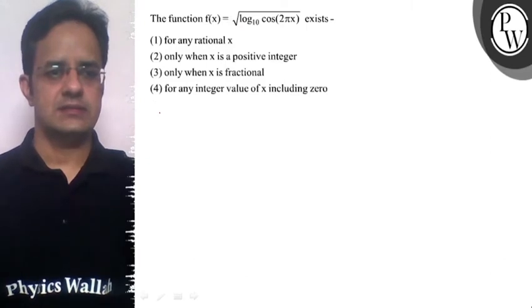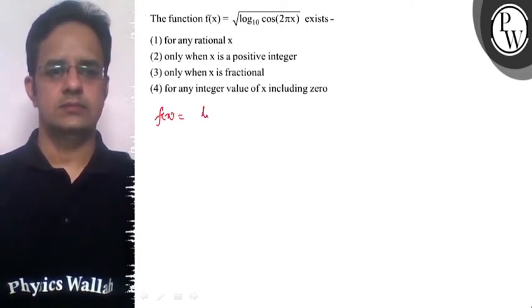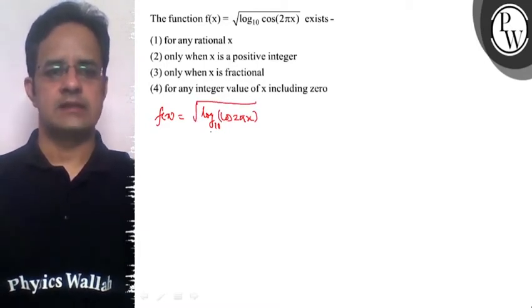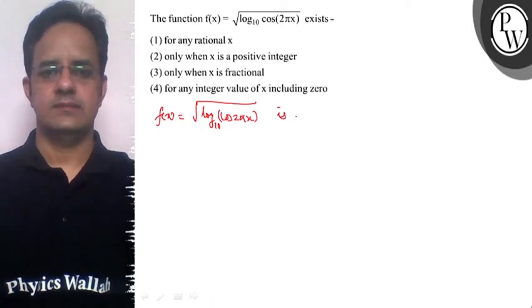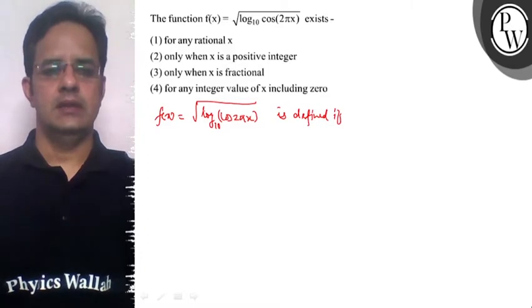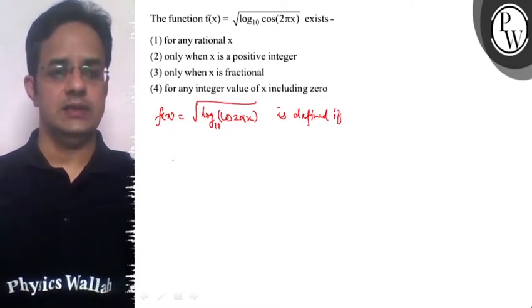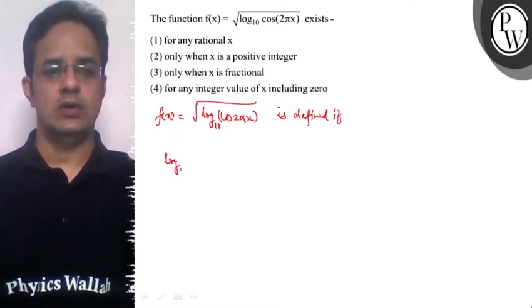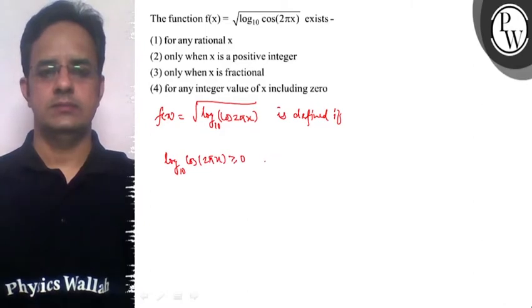Now, this f(x) = √(log₁₀(cos(2πx))) is defined if log₁₀(cos(2πx)) should be greater than or equal to 0, and